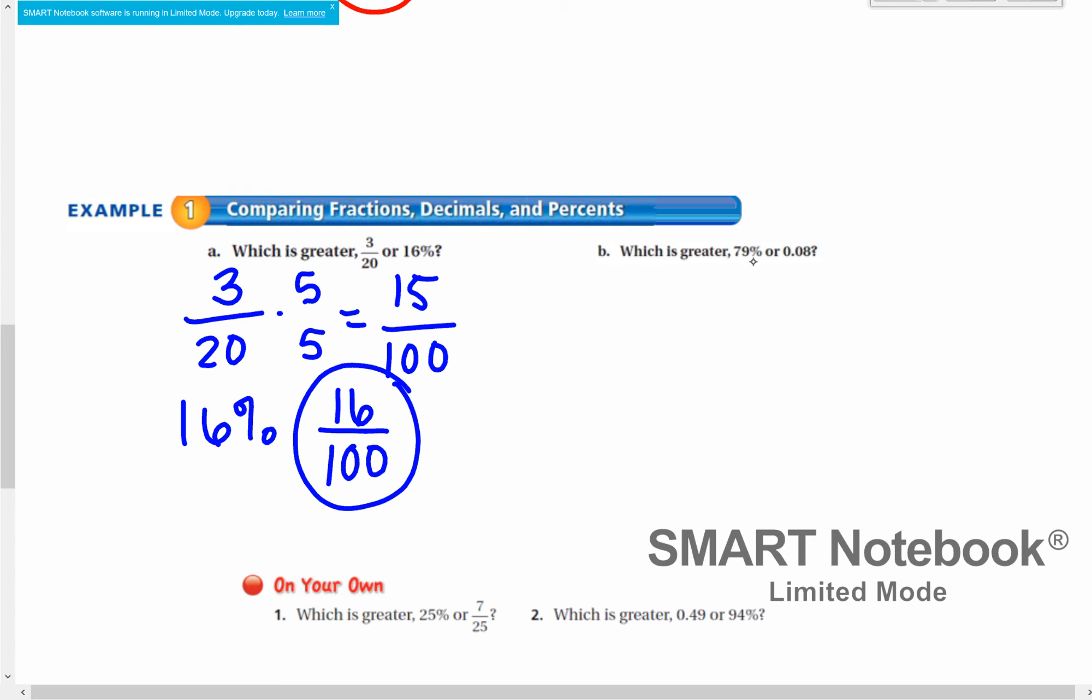Part B. Again, we either want to make them both decimals or both percents. I think comparing percents is easier than comparing decimals. So I'm going to keep 79% as a percent, and I'm going to make 0 and 8 hundredths into a percent by moving that decimal two places to the right. That becomes 8 percent, and 79% would be greater.